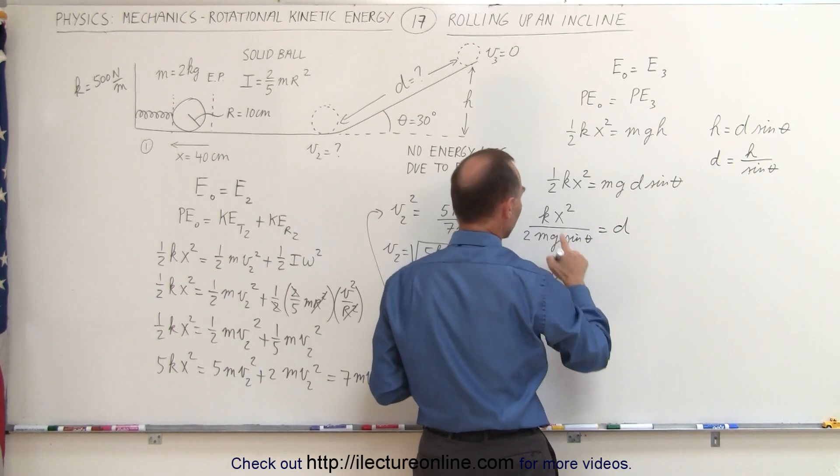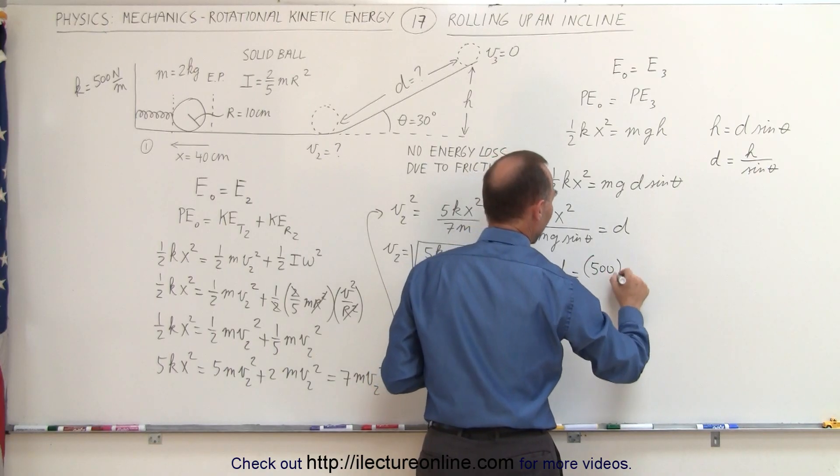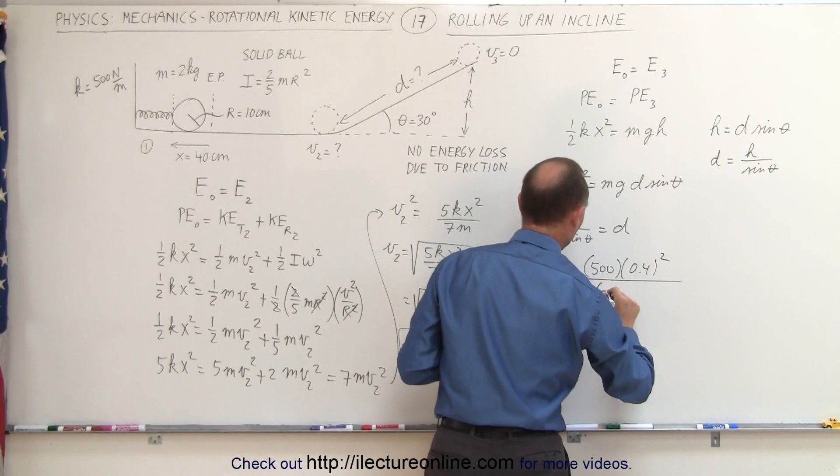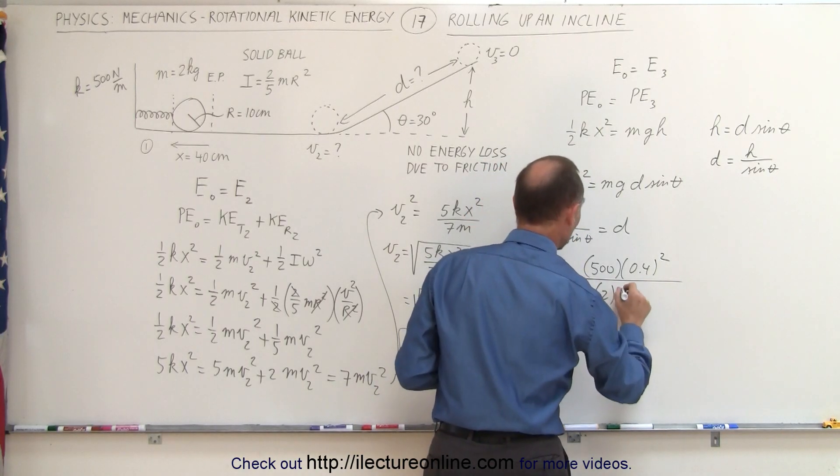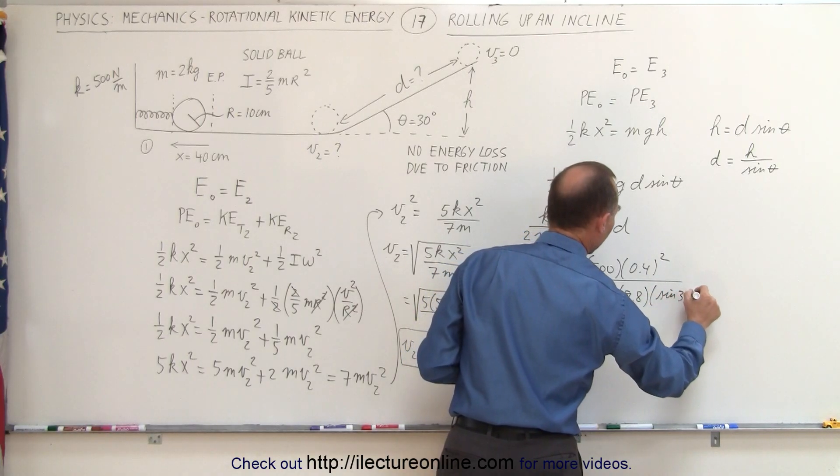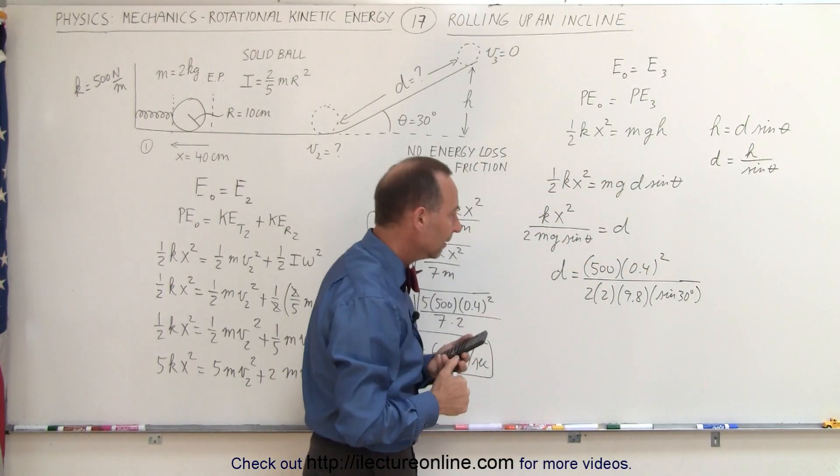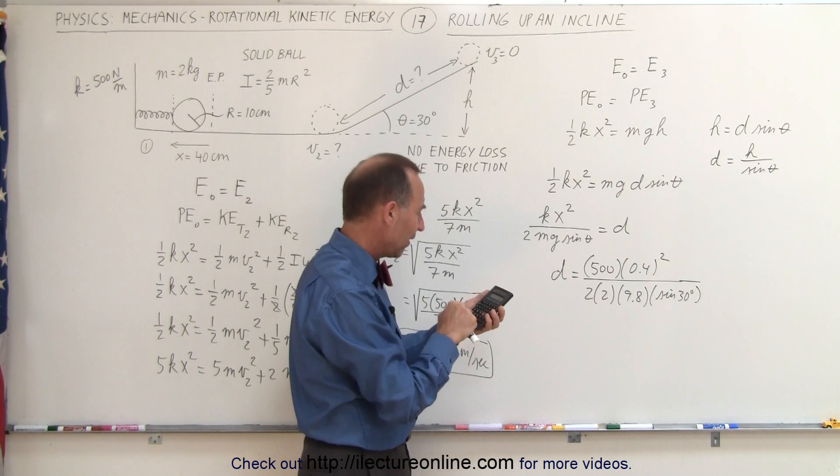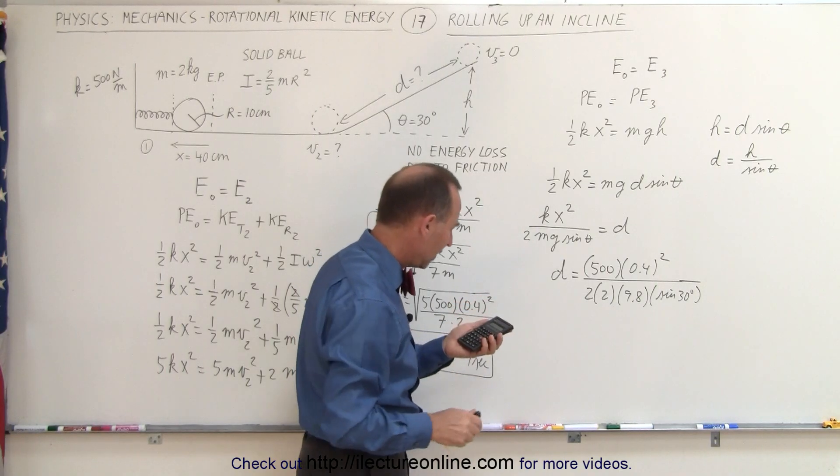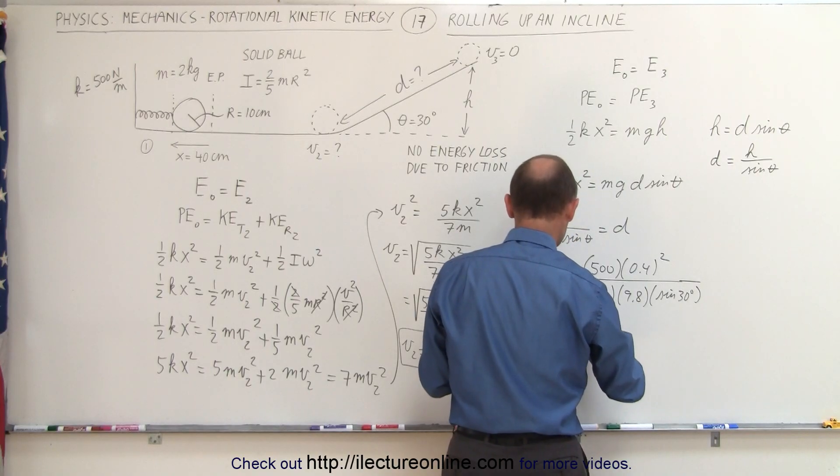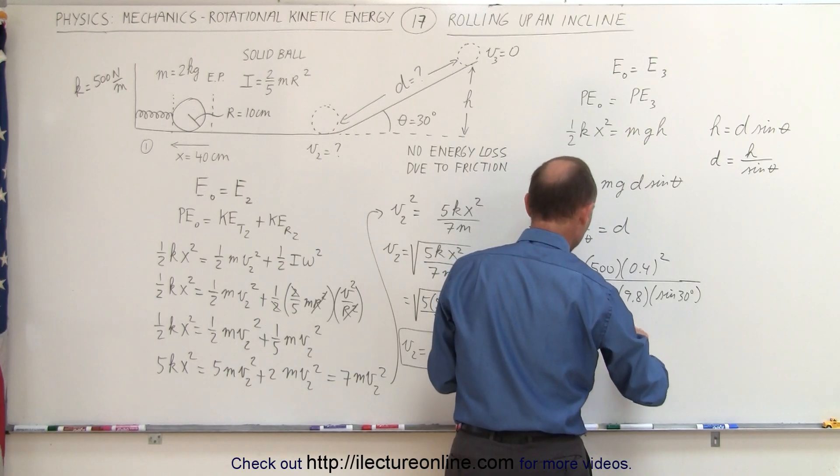d equals k, which is 500, times x squared, 0.4 squared, divided by 2 times the mass, which was 2 kilograms, g which is 9.8, and the sine of 30 degrees, which is 1/2. Plugging that into our calculator, we get 0.4 squared times 500 divided by 4 divided by 9.8 and divided by 0.5, and we get a distance of the incline, d equals 4.08 meters.